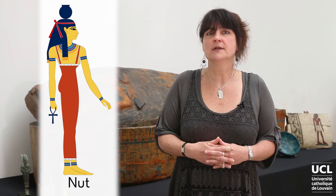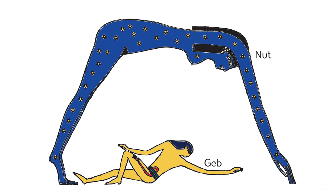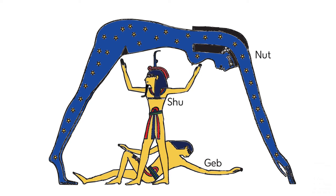Nut represents the firmament, and she is the mother of the celestial bodies. To sum up, these first two stages concern the cosmic elements, or the physical elements which make up the universe in which we live — for example, the air, the earth, the sky. As you can see in this next figure, Geb, the god of the earth, reclines beneath his sister-wife Nut, the sky, from whom he is separated by their father Shu, the god of the air.